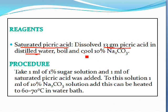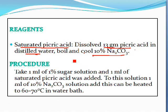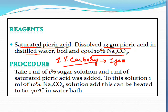To make the saturated picric acid solution, take some water, add picric acid until it becomes saturated, boil for some time, and cool it. Additionally, 10% sodium carbonate solution is required to provide the alkaline medium, and a 1% carbohydrate solution is required — meaning one gram of sugar dissolved in 100 ml of water.